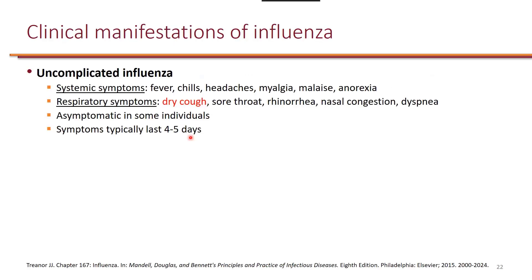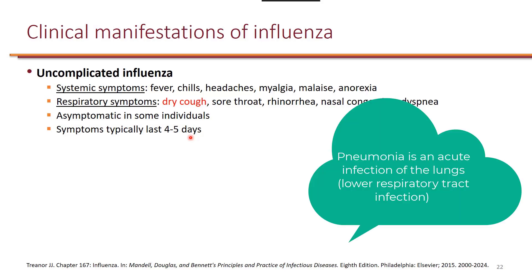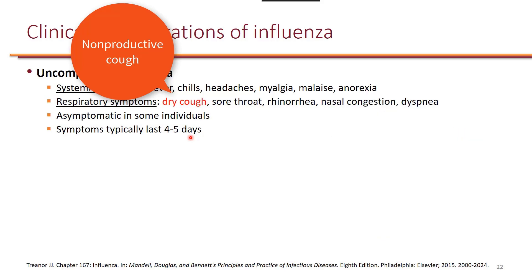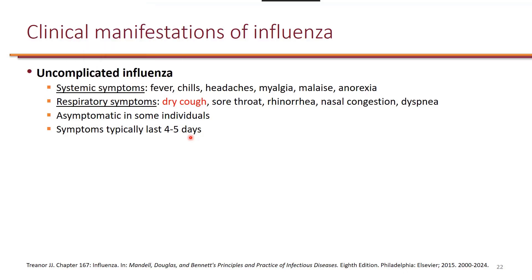Patients with uncomplicated influenza typically have fever, chills, headache, myalgia, malaise, and anorexia — symptoms that are very nonspecific. To distinguish influenza from pneumonia, it's important to note that people with influenza have a dry cough with no sputum production. Some individuals can even be asymptomatic. In uncomplicated influenza, symptoms typically last four to five days.